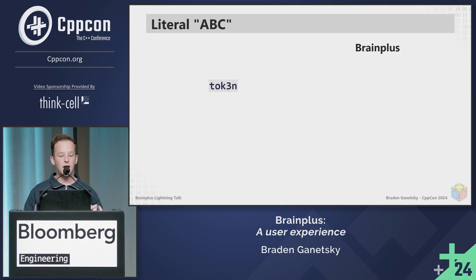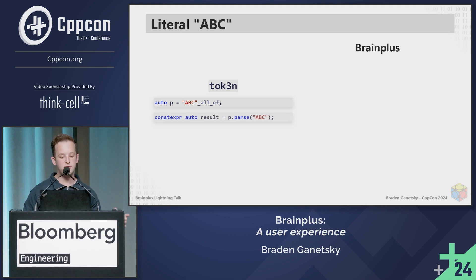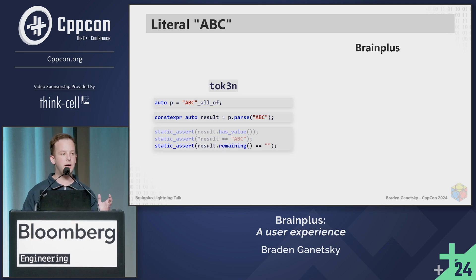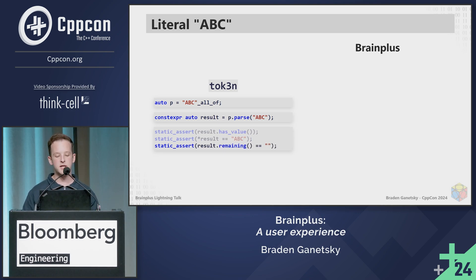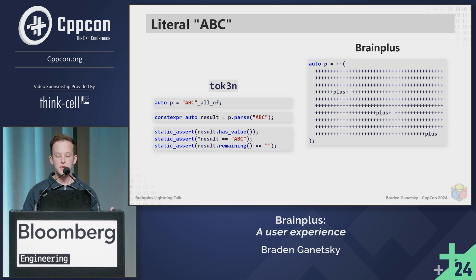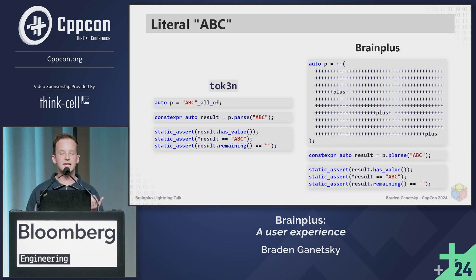If you want a literal ABC in Token, you call the 'all of' user-defined literal, then call p.parse. It pulls off everything, so the result is ABC and the remainder is nothing, as you would expect. In BrainPlus, it's something similar. This compiles — this is real code. You call p.parse and you get exactly the same result.